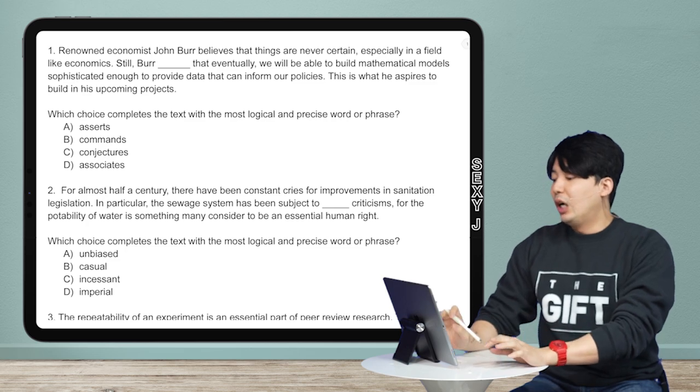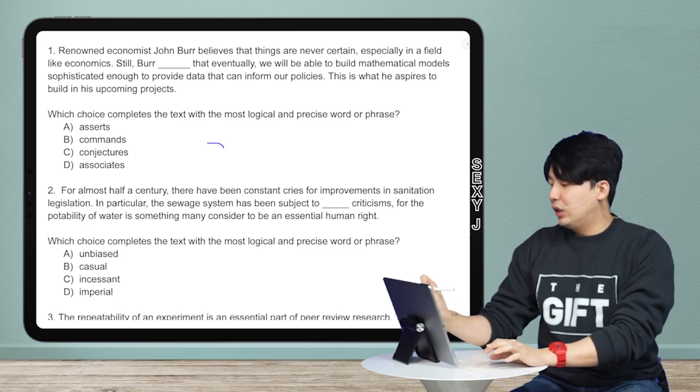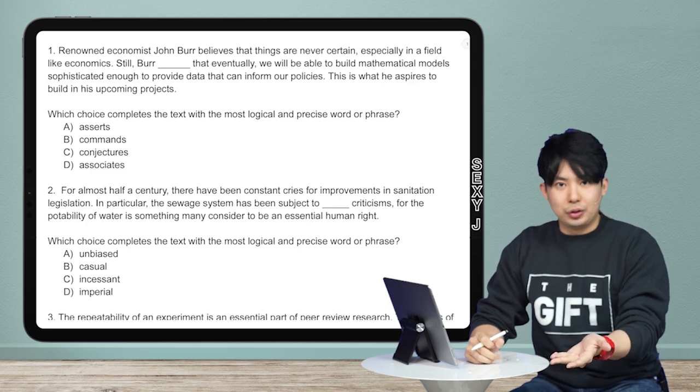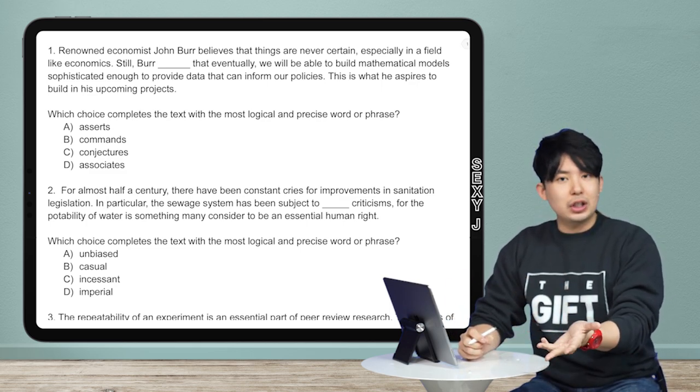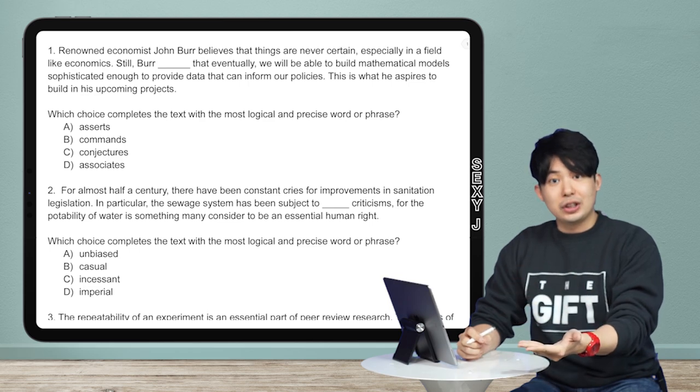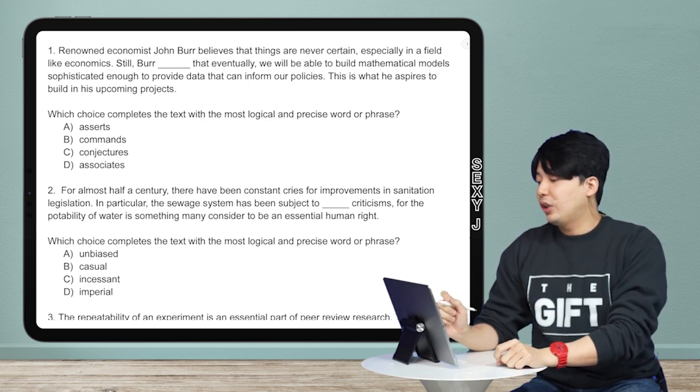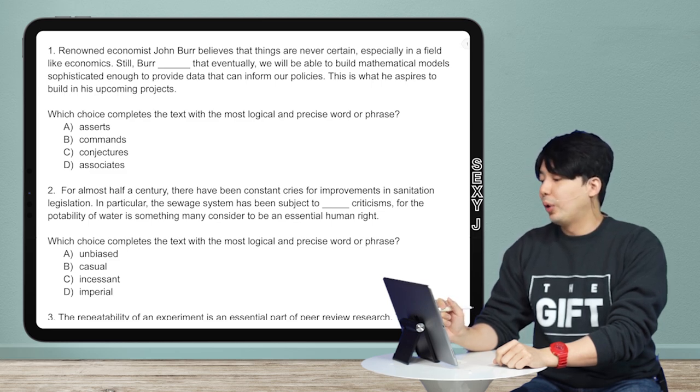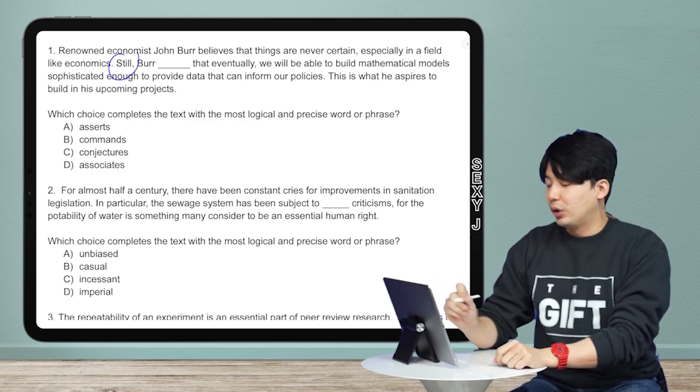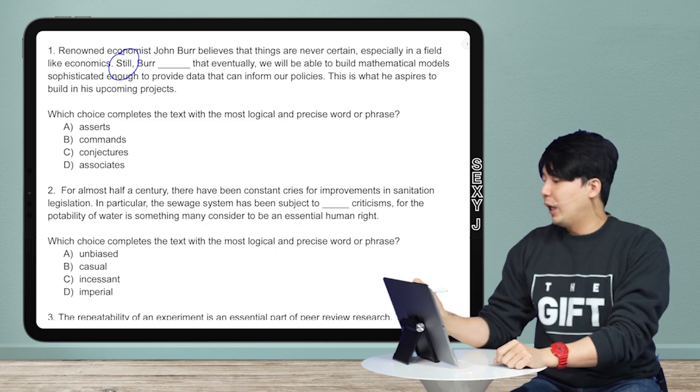So it's a vocab question. What I want to do is I don't really want to be paying attention to the whole text because we never want to do that, right? Because that's a waste of time. So I'm looking here. I'm looking for keywords. What kind of keywords are there? Well, let's actually take a second to look at the question. Renowned economist John Burr believes that things are never certain, especially in a field like economics. Still, Burr, these types of transition words. Still. So what do we have? He believes things are never certain. Still, Burr, blank, that eventually.